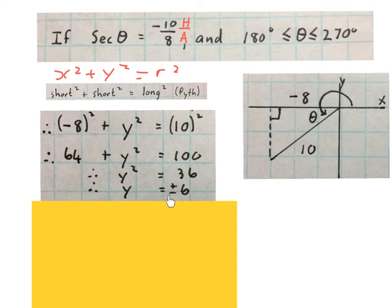Be careful, a lot of kids forget this plus minus. If you bring a square root into an equation, remember that there's a plus or minus on the right-hand side. Then you decide if you want to use the plus 6 or the minus 6 or both.